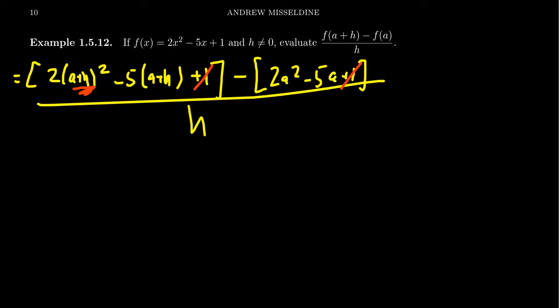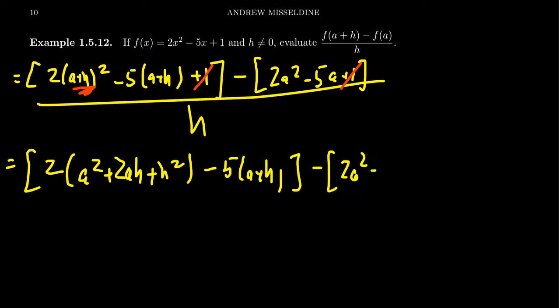The next thing I want to do is FOIL out this (a+h)². If we do that, we're going to get 2(a² + 2ah + h²) just by the usual FOIL method, minus 5(a+h). And then we subtract from here 2a² - 5a. And this sits above h.